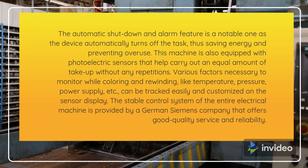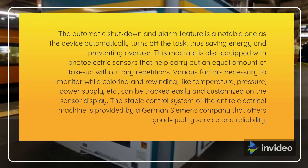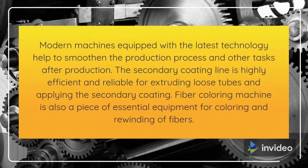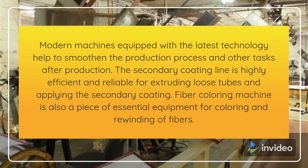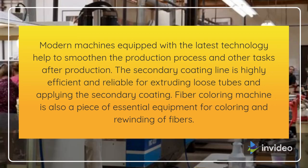This machine is also equipped with photoelectric sensors that help carry out an equal amount of take-up without any repetitions. Various factors necessary to monitor while coloring and rewinding, like temperature, pressure, power supply, etc., can be tracked easily and customized on the sensor display. The stable control system of the entire electrical machine is provided by a German Siemens company that offers good quality service and reliability. Modern machines equipped with the latest technology help to smoothen the production process and other tasks after production. The secondary coating line is highly efficient and reliable for extruding loose tubes and applying the secondary coating. The fiber coloring machine is also an essential piece of equipment for coloring and rewinding of fibers.